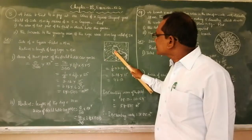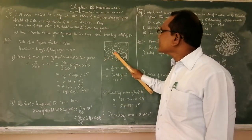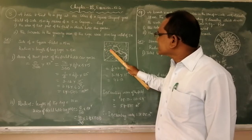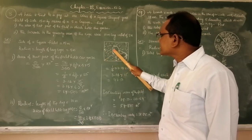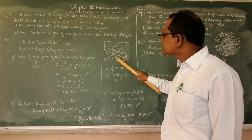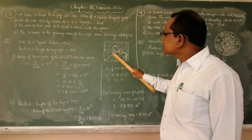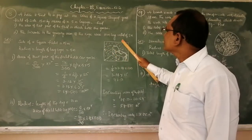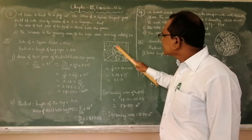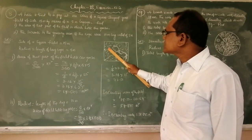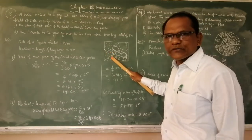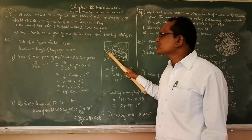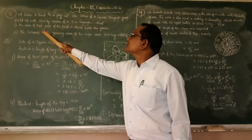With radius 5 meters, the horse can graze this much area. Check the diagram — the area the horse can graze is in the form of a sector. This place, indicated by the arrow, is in the form of a sector. We can see this is 90 degrees — the grazing area is a sector shape.